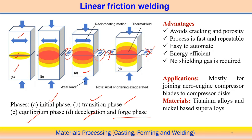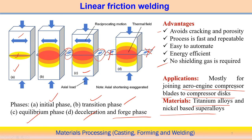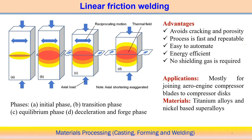Advantages of linear friction welding include: avoids cracking and porosity, the process is fast and repeatable, easy to automate, energy efficient, and no shielding gas is required. Applications are mainly found in joining aero engine compressor blades to compressor discs. Titanium alloys and nickel-based super alloys can be successfully joined using this process.